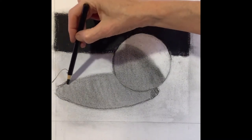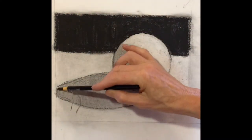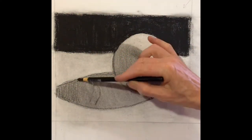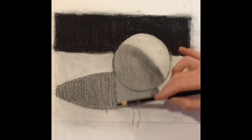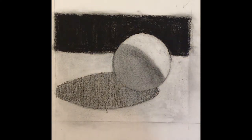Now I'm using my charcoal pencil to define my shadow a little better. It's a little thicker than the last one. Again, the angle of the light makes all the difference in how the light is being cast on the object.